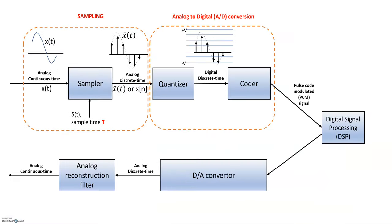To summarize where this fits in the bigger pipeline: we start with an original analog continuous time signal, sample it to get an analog discrete time signal, then pass it through the A-to-D converter to get a digital discrete time signal, which is coded into a pulse waveform. What we can transmit on electrical lines or process is just a stream of zeros and ones. That's it for this video — see you in the next one, thank you.